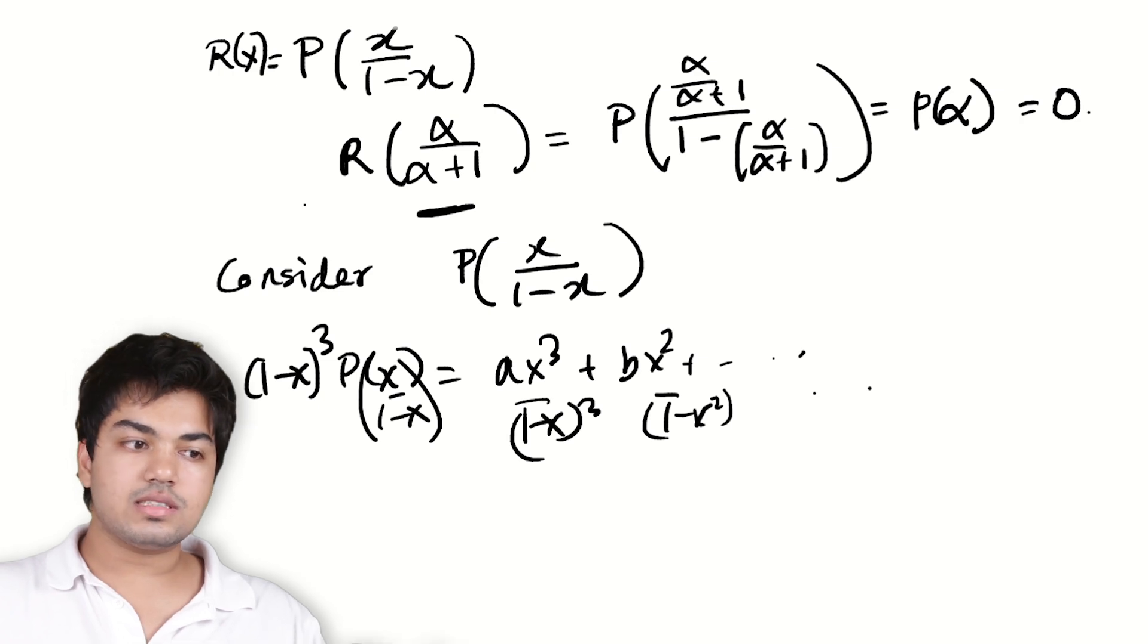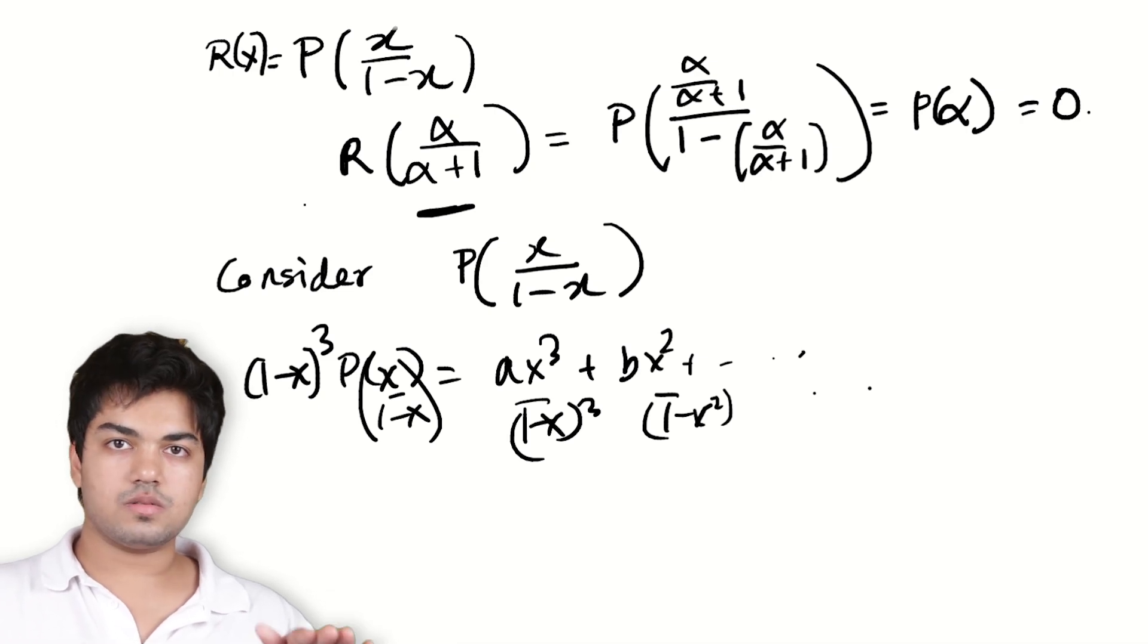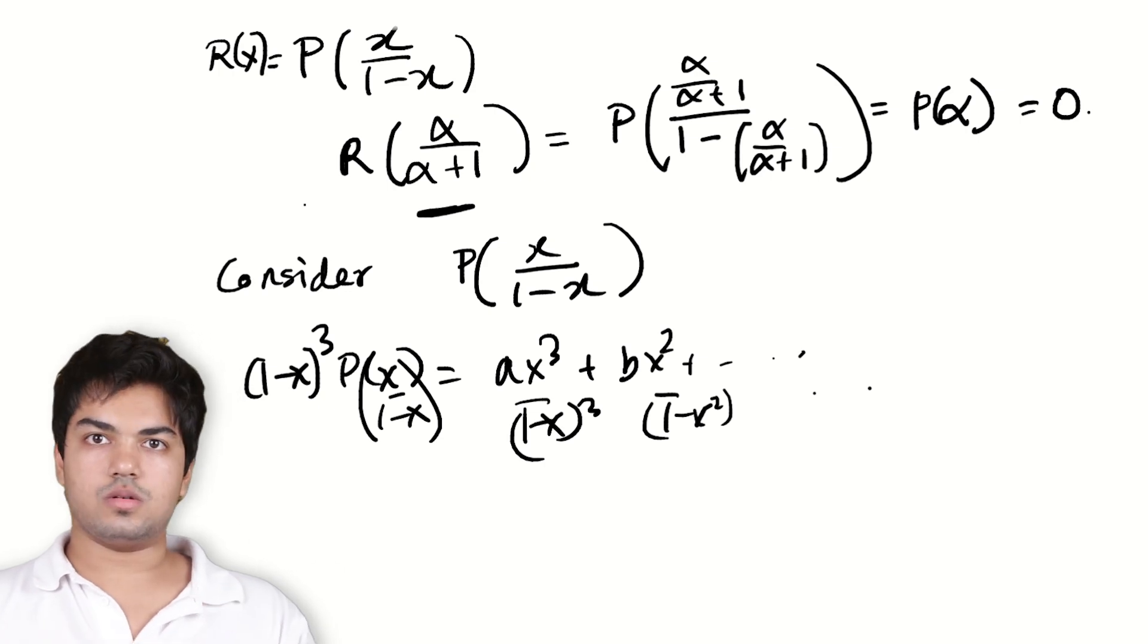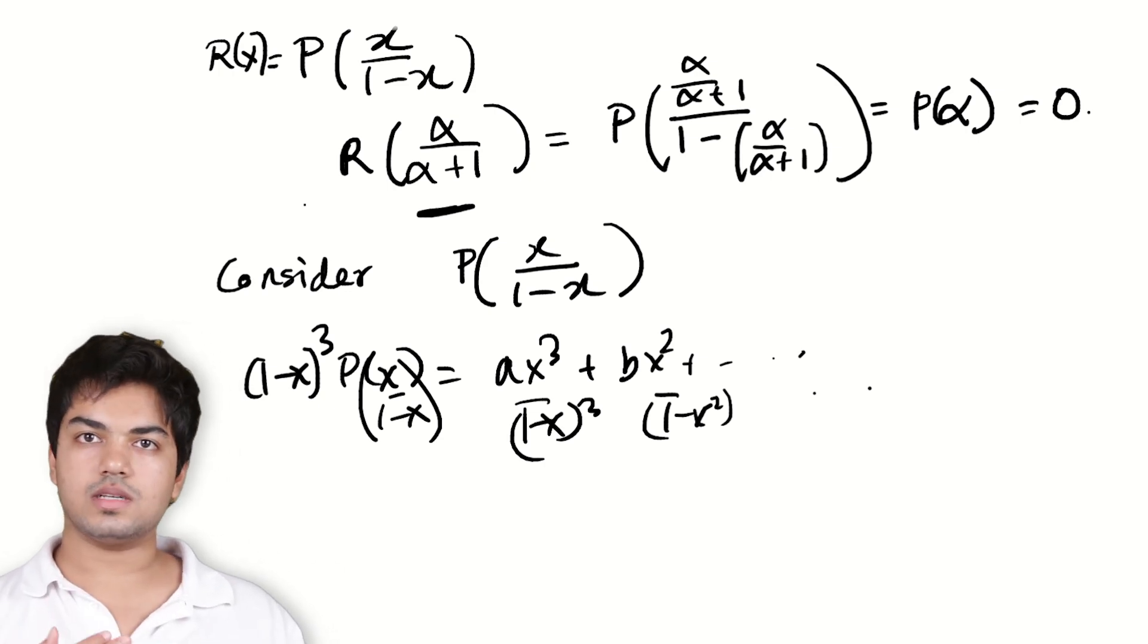This is a polynomial which is still 0 at α/(α+1), β/(β+1), γ/(γ+1). Right? But it's also a polynomial. So now we can use the polynomial methods.